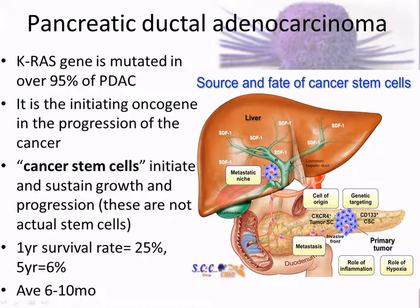The tumor invades blood vessels and blocks endocrine and exocrine function. You may have digestive issues and hormone problems. The key hormone that comes to mind with the pancreas is insulin, so you may have problems regulating blood sugar. That's why pancreatic cancer is so dangerous — it affects everything, endocrine and exocrine function.